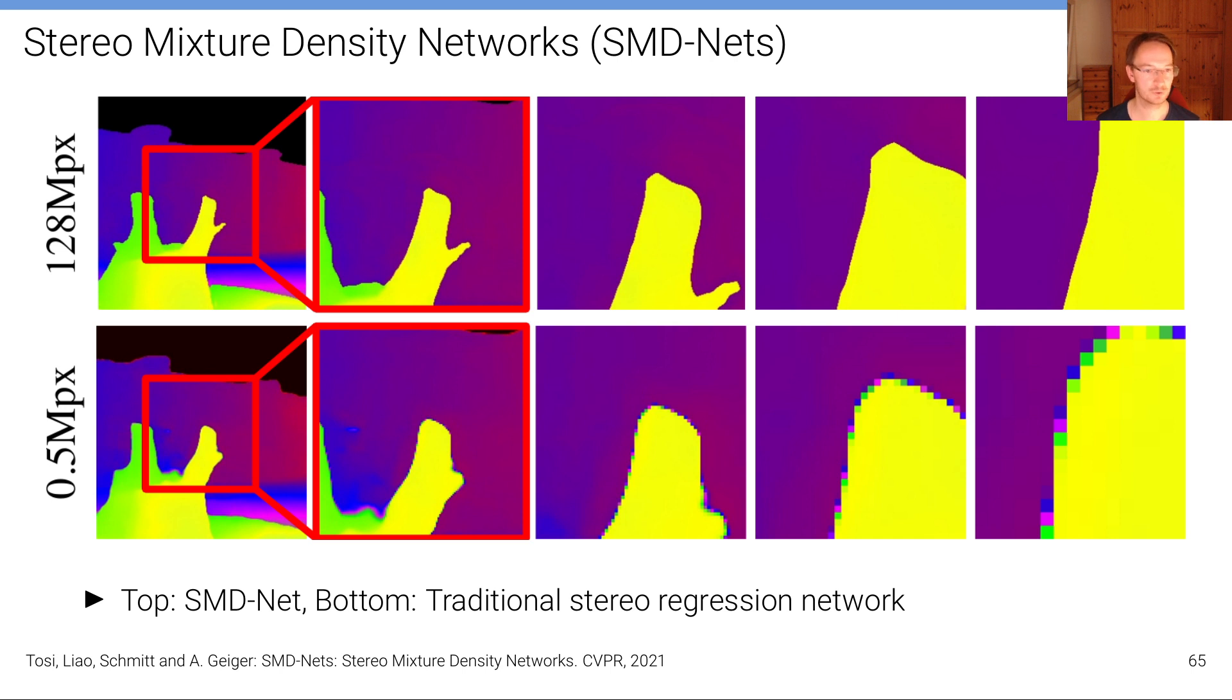So here's an example of this. On the bottom we see an example of a classical state-of-the-art stereo deep stereo matching network. This is an output of course for a test image that wasn't part of the training set. We can see that the resolution, the output resolution, the maximum output resolution that can be achieved here is 0.5 megapixels so we get a pixelated result and we also see this smearing, this bleeding at the boundaries where we get disparity values that are actually incorrect.